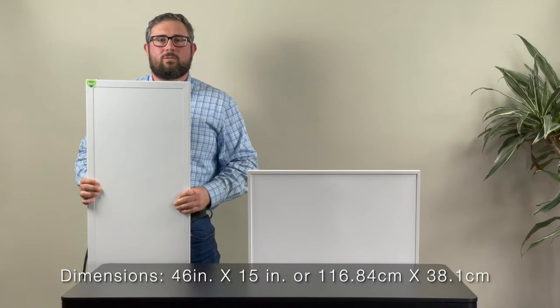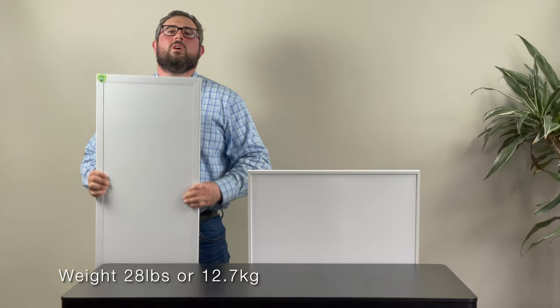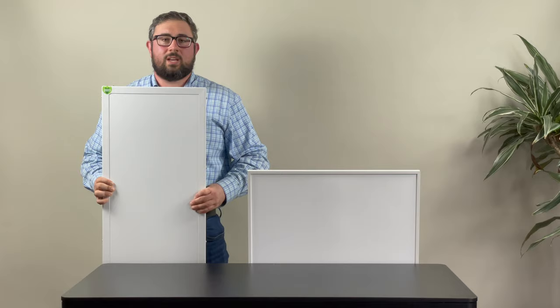This 1500-watt panel is made in the U.S. with U.S. components. Physical dimensions are 46 inches by 15 inches, and it has a weight of 28 pounds. It's made out of steel and porcelain and aluminum oxide element, and it's really dense. That is intentional for its thermal mass, which I'll talk about later in the video.